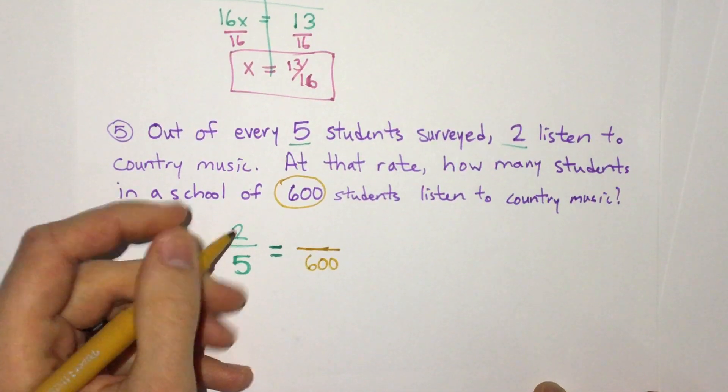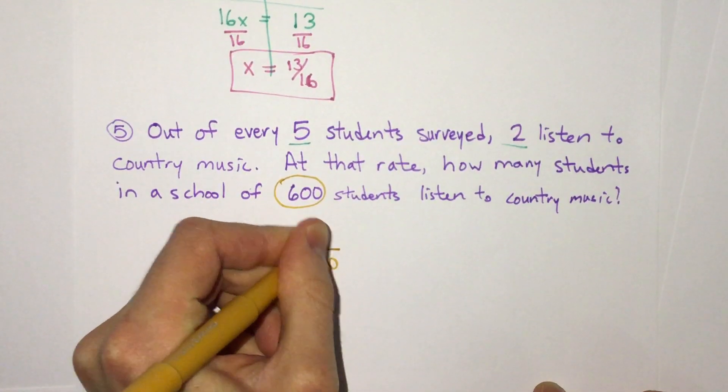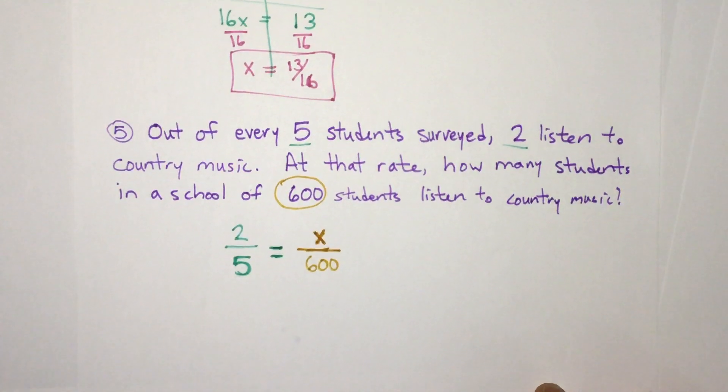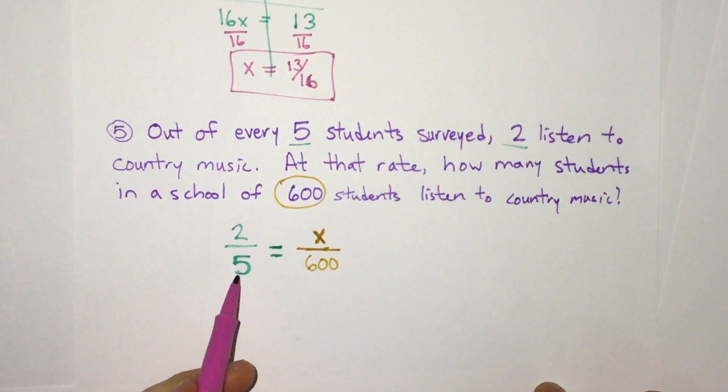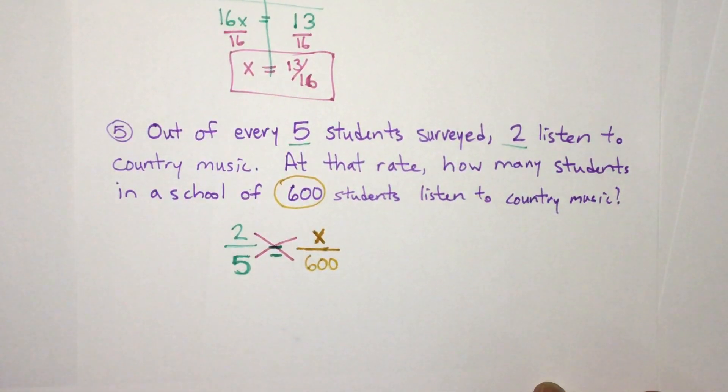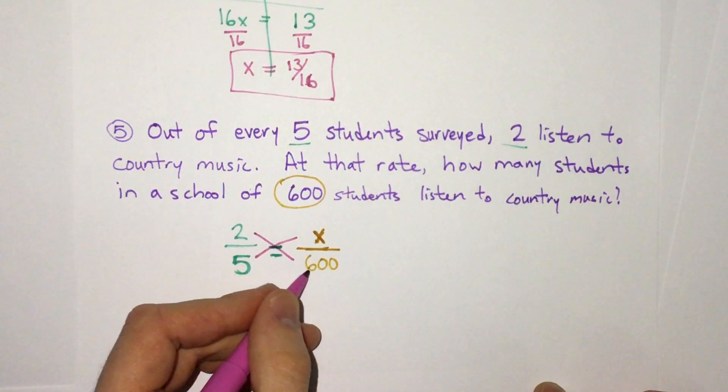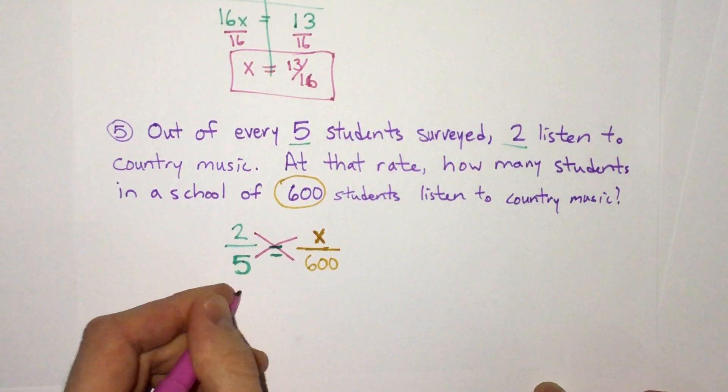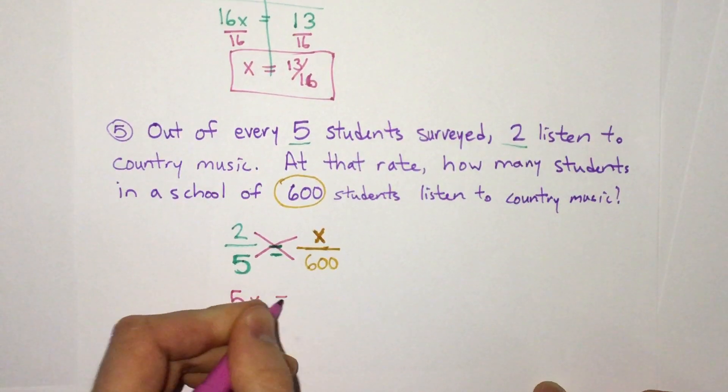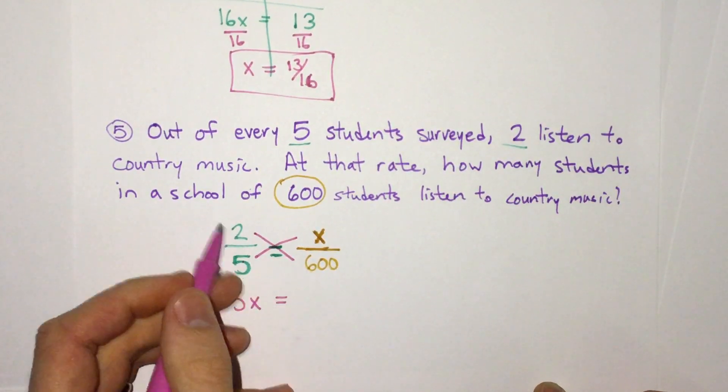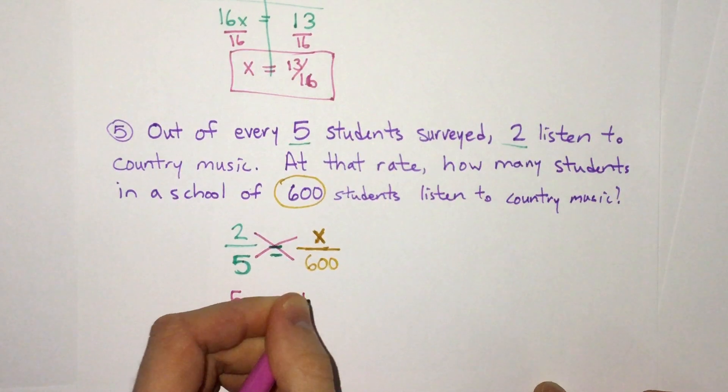And we want to know how many listen to country music. The top, the two, had to do with country music. So in our other fraction, the top will be x, because we don't know it. Now we have a proportion: two fifths equals x over 600. So we take our fraction that's equal, cross multiply. Five times x is 5x, equals 600 times two is 1200.